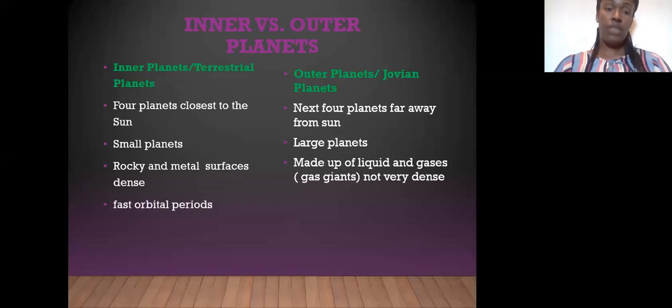The fourth difference, they have a fast orbital period because they are closest to the Sun. The outer planets have slow orbital periods because they are far away from the Sun.